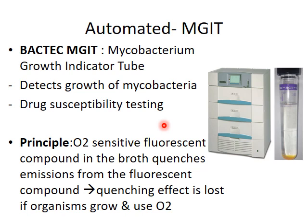We shall see the automated system in detail. One of the automated systems available is BACTEC MGIT, which stands for Mycobacterium Growth Indicator Tube. It detects the growth of mycobacterium and also performs drug susceptibility testing. The principle behind this method is that the media uses an oxygen-sensitive fluorescent compound dissolved in the broth. Initially, dissolved oxygen quenches the emissions from the fluorescent compound. Later, actively respiring microorganisms consume the oxygen, the quenching effect is lost, and fluorescence is detected by the machine, flagging the sample as positive.